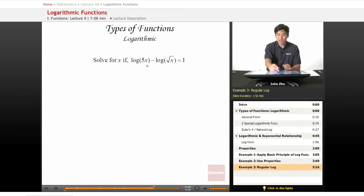So if we have two log terms that are subtracting each other, we know that by the log property that becomes log of 5x over square root of x equals 1.